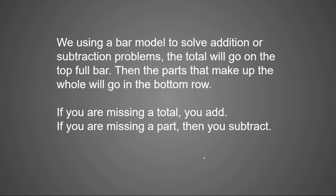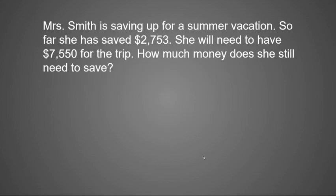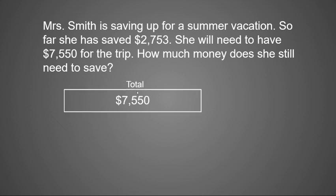So let's look at some examples. Here's our first example. Mrs. Smith is saving up for a summer vacation. So far she has saved $2,753. She will need to have $7,550 for the trip. How much money does she still need to save? I see that we have a total that she needs and a part that she's made so far. Let's start with our total — the total is going to go in a bar, so we're going to draw a rectangle at the very top and write our total, which was $7,550.